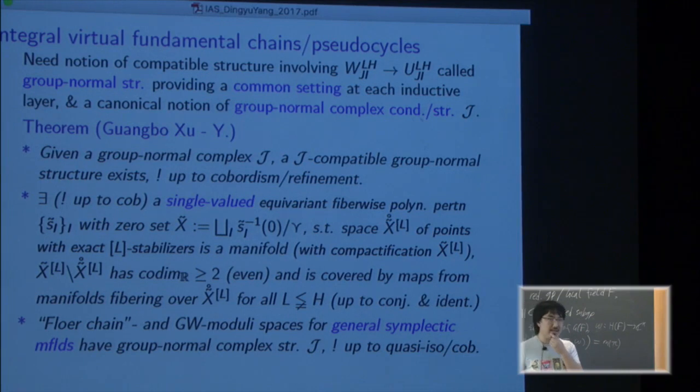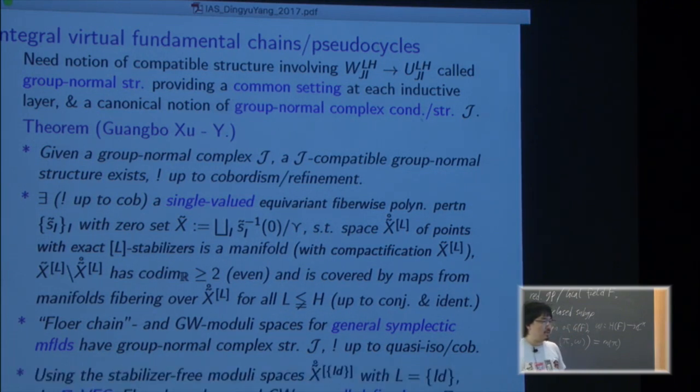And all the moduli space in symplectic geometry admits such group normal structures. So in the end if you just apply to the trivial group you get this integral virtual fundamental chain or cycle. And because of those well-defined, it's up to cobordism or up to very coherent thing, so you get a well-defined theory over Z.